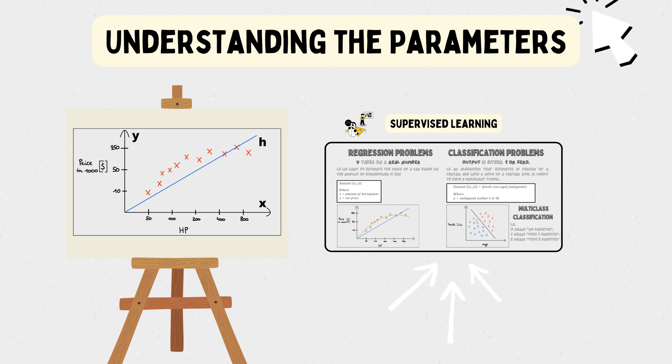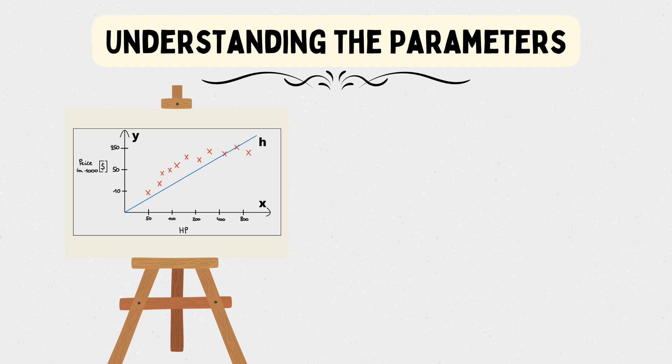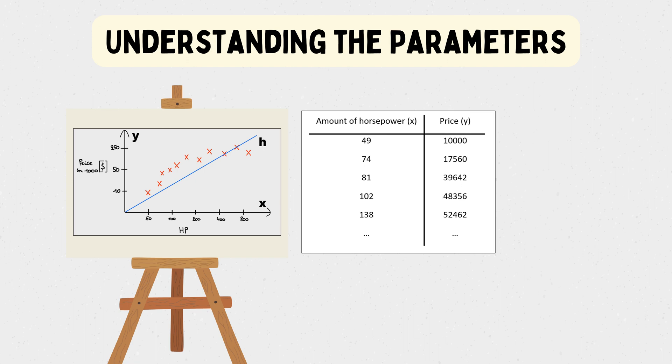That said, let's understand the critical parameters we're dealing with in linear regression. Let's do this with the following example. Assume we have a regression problem that tries to estimate the amount of horsepower a car has based on the price of the car. Then our data set might look like this.